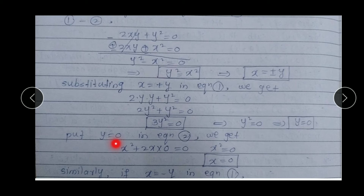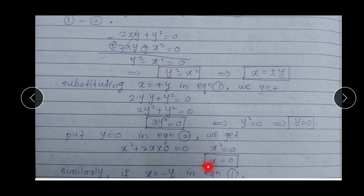Putting y = 0 into equation two: x² + 2x·0 = 0, which implies x² = 0, so x = 0. Therefore the critical point is (0, 0).